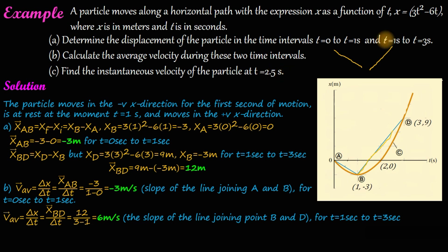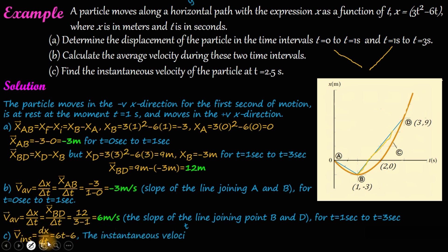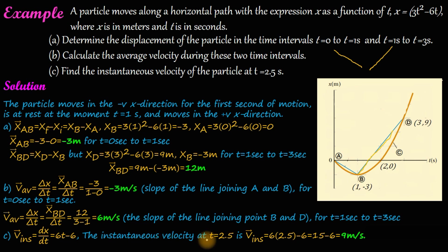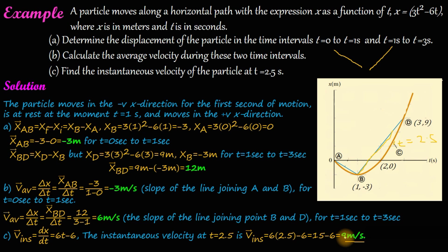The instantaneous velocity is equal to dx divided by dt, the derivative of x with respect to time. At 2.5 seconds, the instantaneous velocity is found using the derivative. This gives the instantaneous velocity of the particle at 2.5 seconds. Please subscribe to our channel.